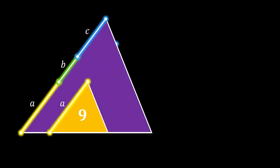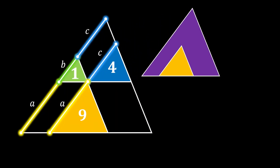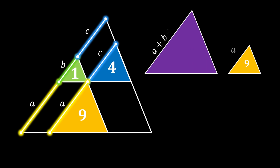Now let's have a look at the relation between our big triangle and our three inscribed triangles. First, we will focus on our big triangle and our bottom inscribed triangle. As you already know, those two triangles are similar, so we know that the relation between their sides is actually equal to the relation between the square roots of their areas.